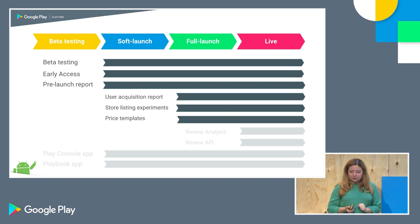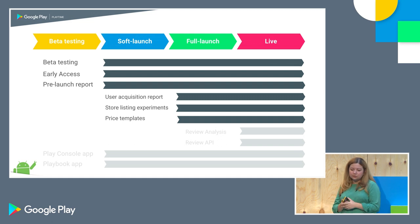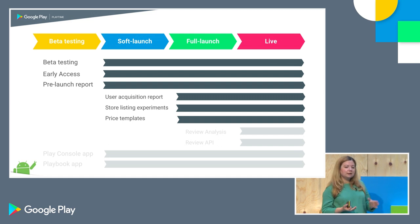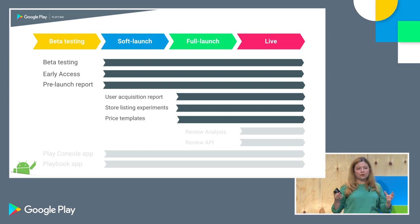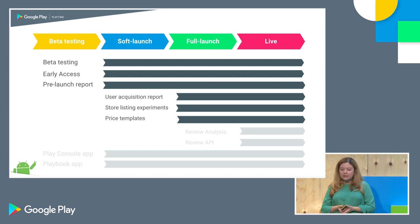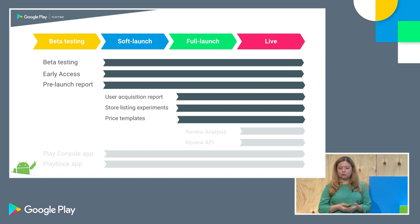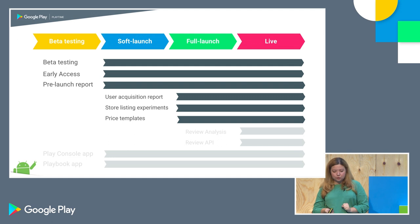User Acquisition Reports, store listing experiments, and pricing templates are only valid once you've fully launched, as these tools require a certain amount of data before you can work with them. You can only use them once your app is live and you keep iterating.